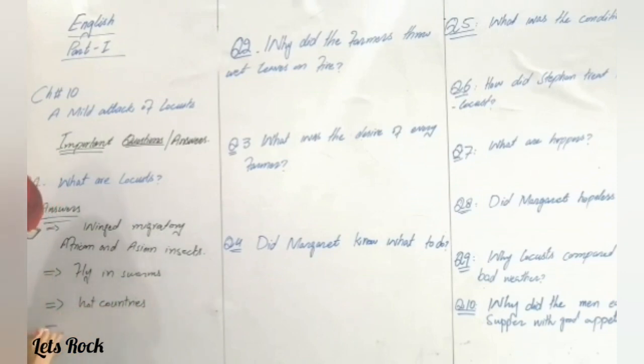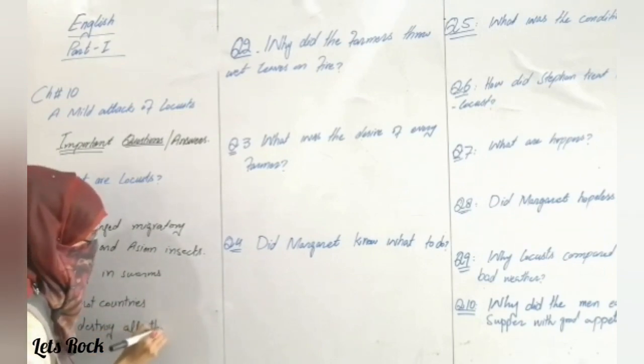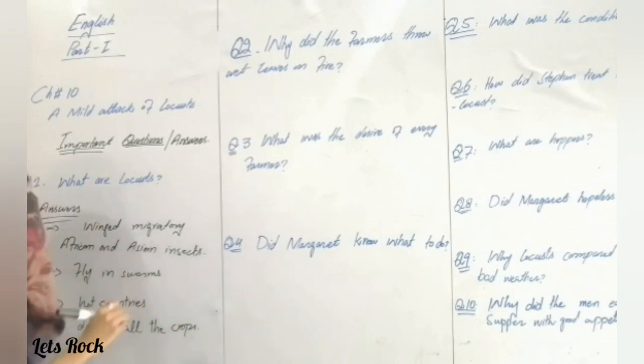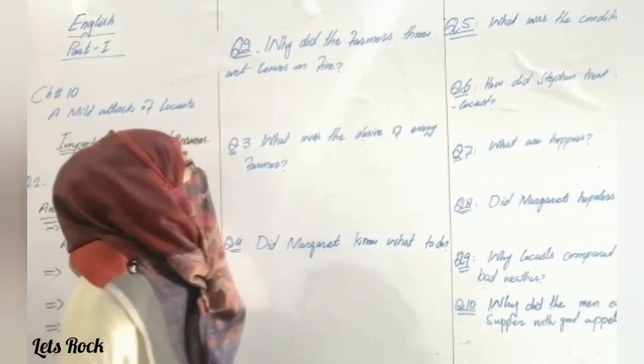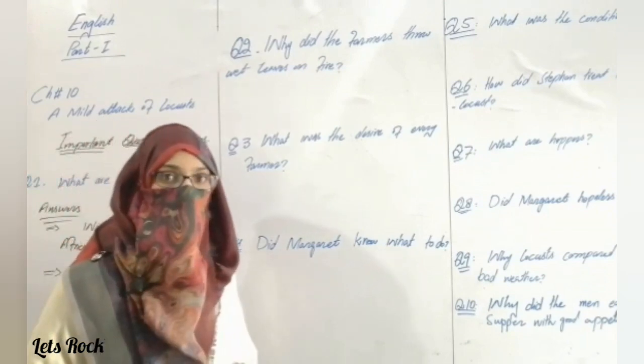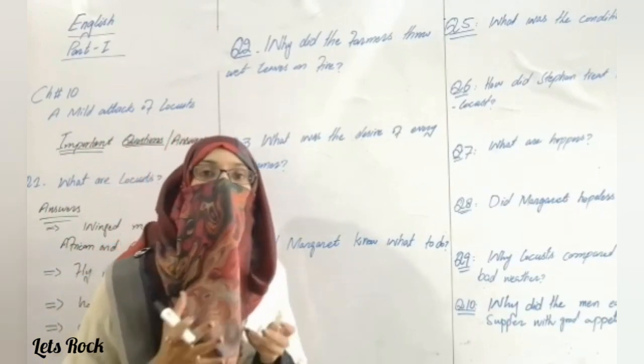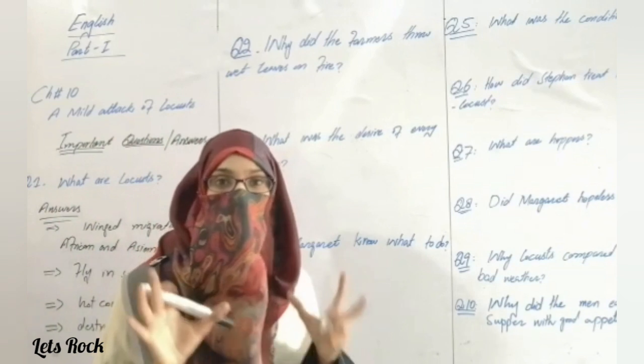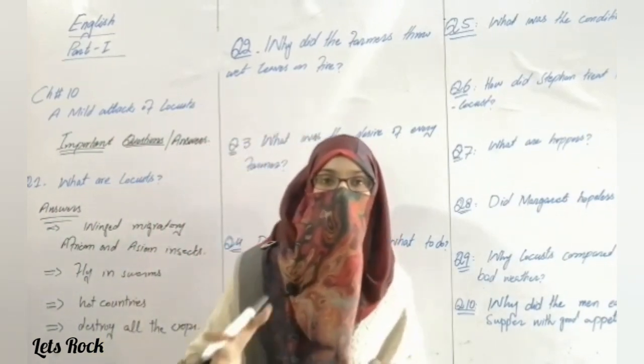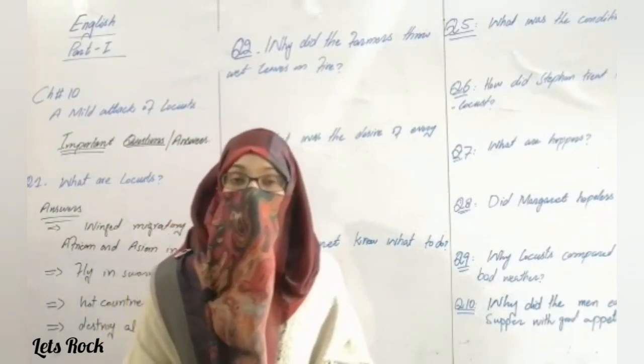Question number two: Why did the farmers throw wet leaves on fire? When many locusts came to their farms, the farmers lit fires around their fields and threw wet leaves on them.